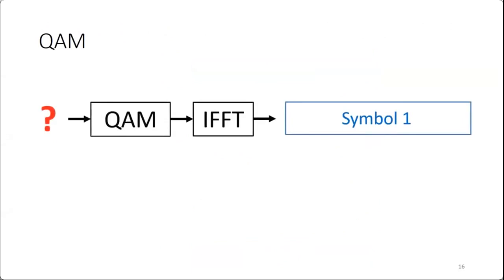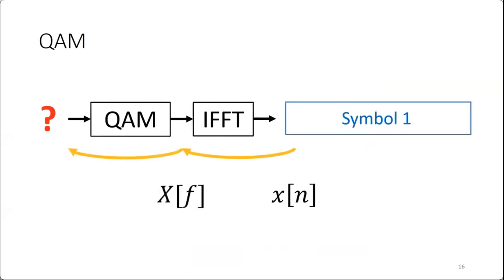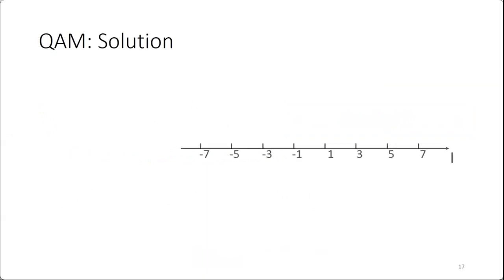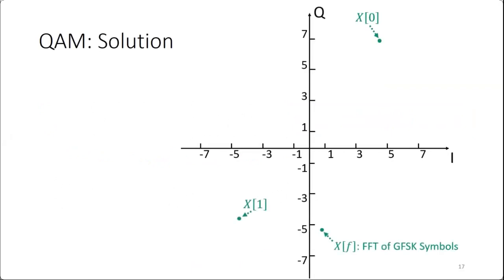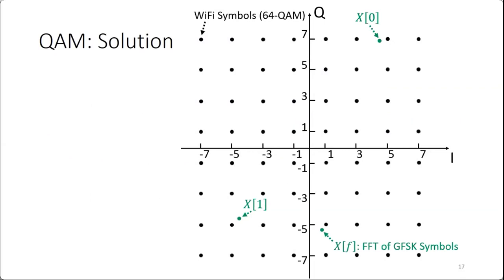The second challenge is QAM modulation. Wi-Fi symbols are generated in the frequency domain by the QAM modulator with 64 possible values. Given target frequency-domain samples S(f), the solution is to choose the Wi-Fi QAM symbol X̂(f) closest to each S(f) in the complex plane. The third challenge is the insertion of pilots and nulls: not all 64 subcarriers carry data — some carry pilots and some are null — which corrupts the target spectrum. This is addressed by frequency planning, selecting the Wi-Fi channel whose pilots and nulls have least overlap with the target Bluetooth spectrum.